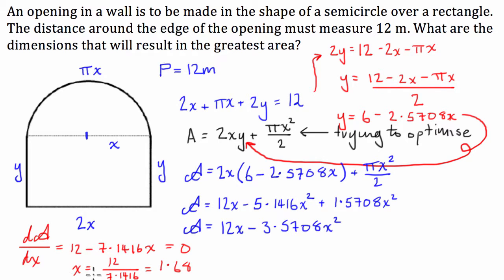So that's what our x is going to be. But notice how the dimensions of this, x is not equal to the width. The width is equal to 2x, because we've made x equal to the radius. So, the width of it, the width of this opening is going to be, is equal to 2x, which is equal to 3.36.